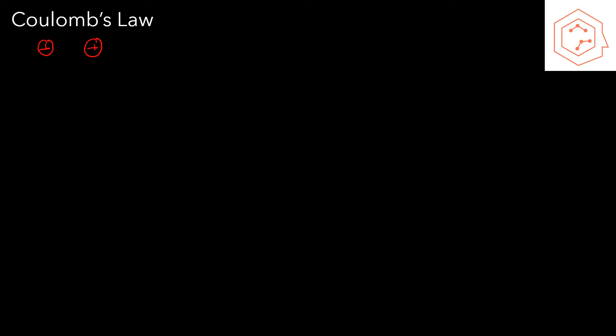Now we're ready to learn more about electrostatics. As a reminder from previous years, if we have two like charges — a positive paired with a positive, or a negative paired with a negative — then they will tend to repel and move away from each other. On the other hand, if we have opposite charges, a positive paired with a negative, then they will tend to attract and move towards each other.